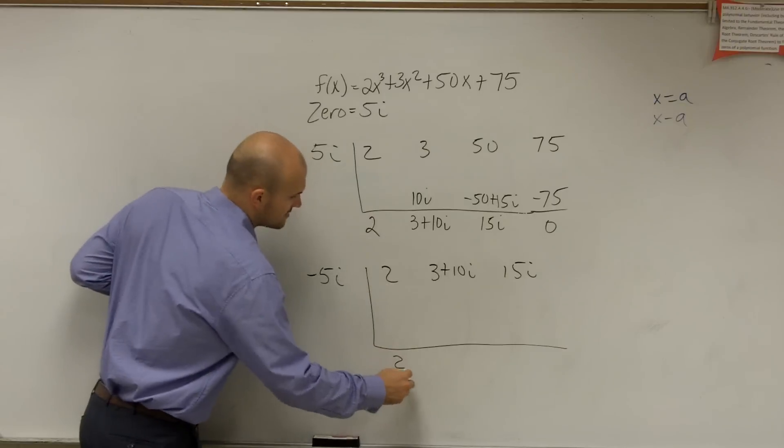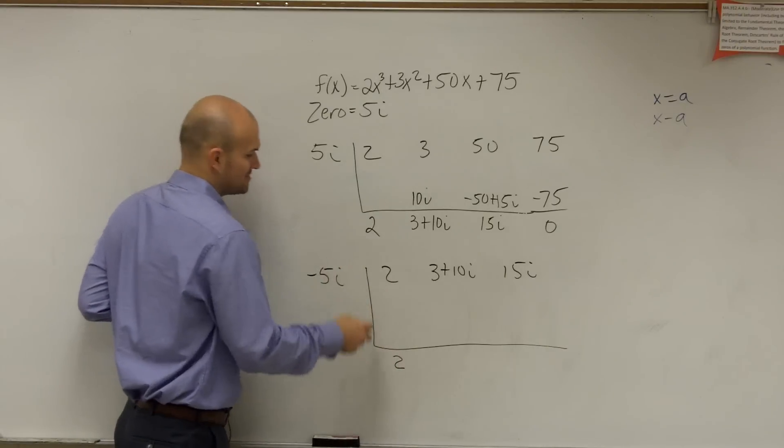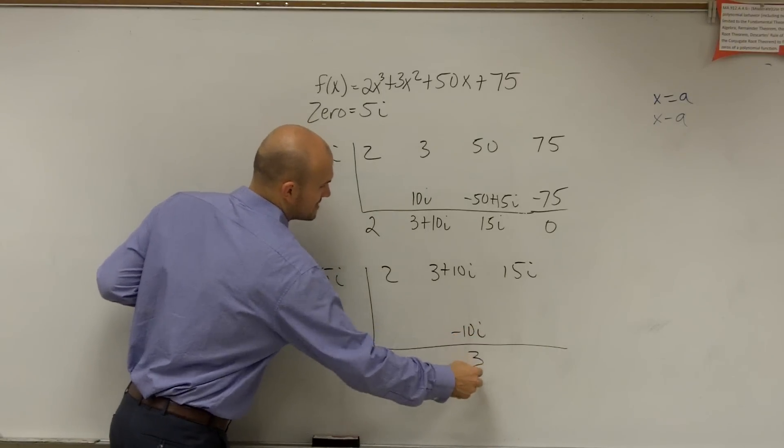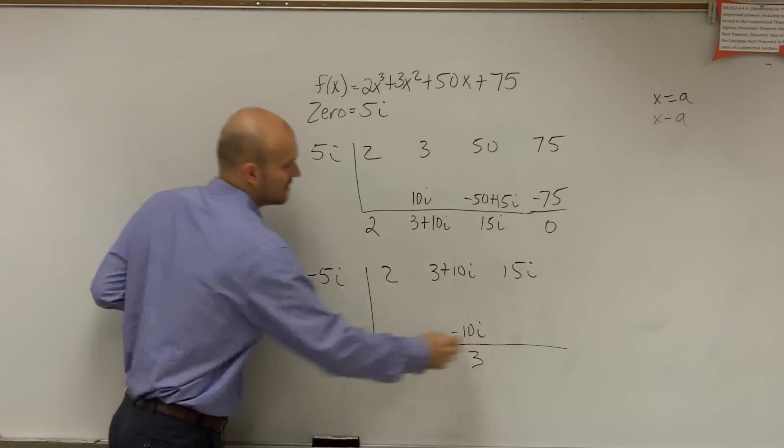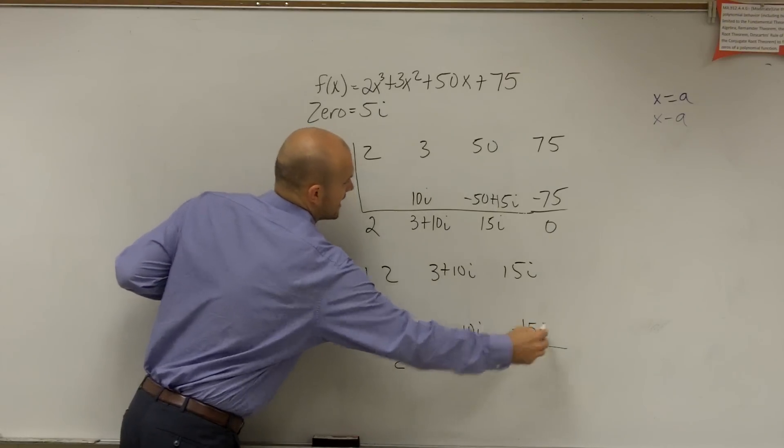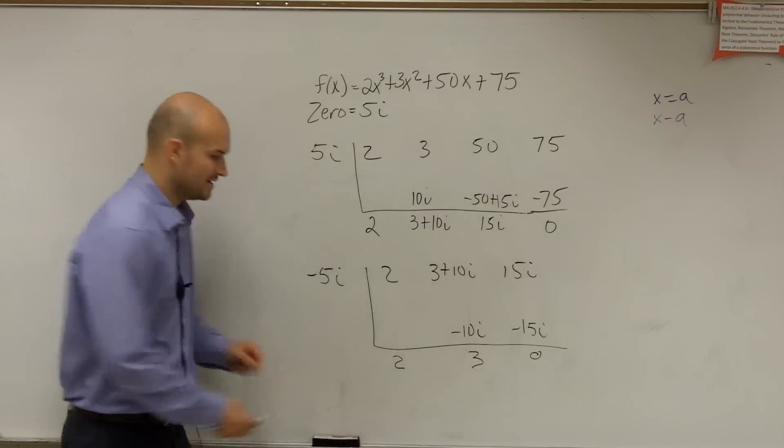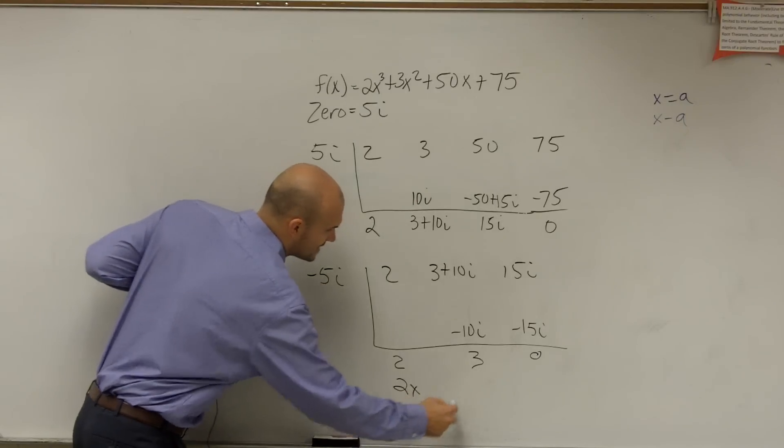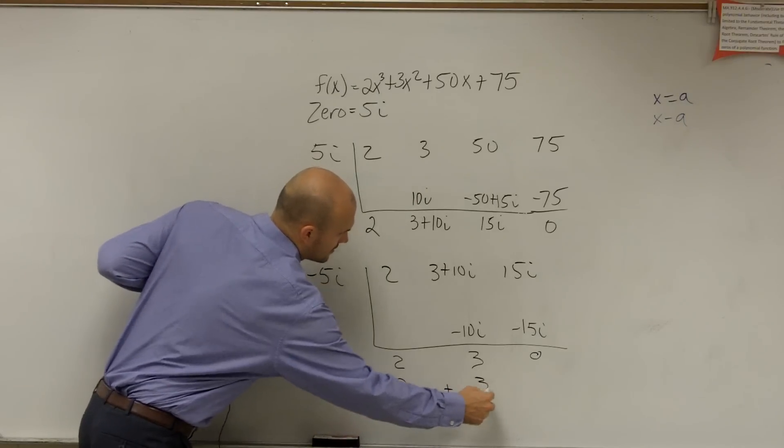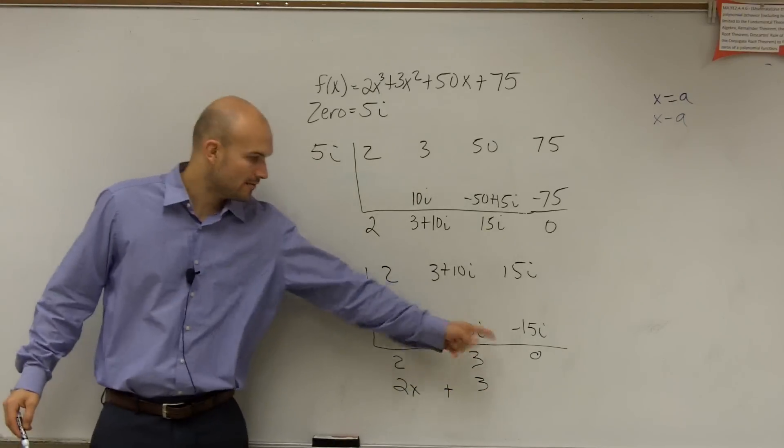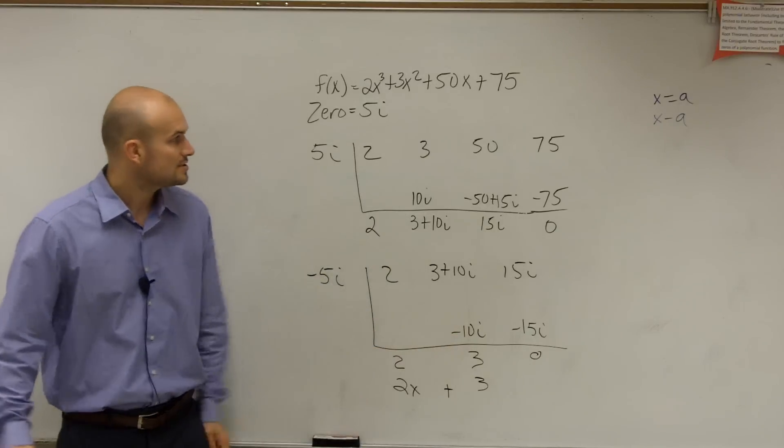So again, let's just follow the process. Bring down the 2. 2 times negative 5i is negative 10i. Drop down 3. 3 times negative 5i, negative 15i. So therefore, that becomes 0. And I'm left with my resulting polynomial or factor is going to be 2x plus 3. As that's my remainder, constant, linear term.